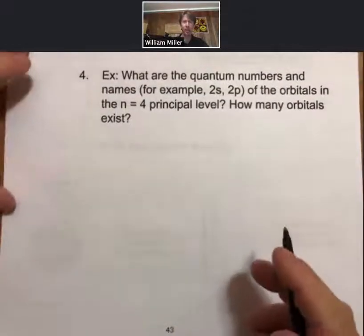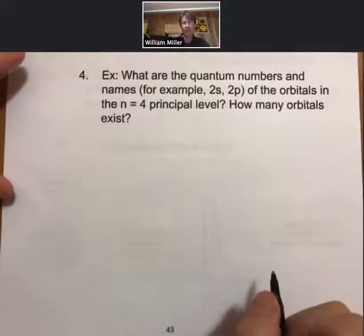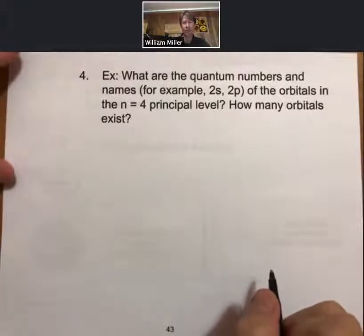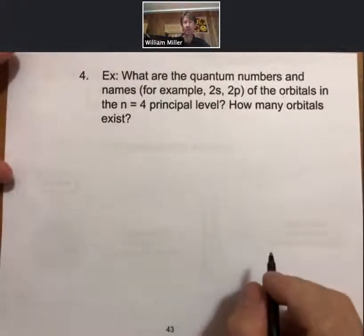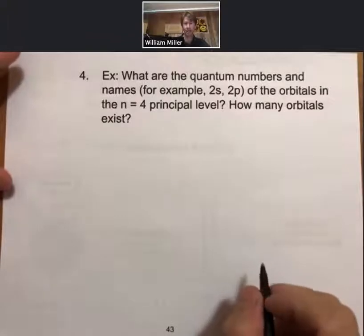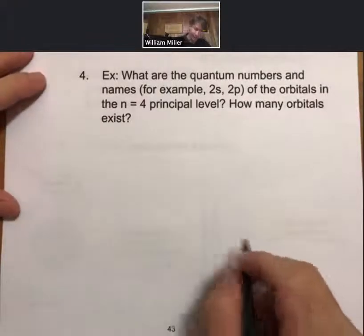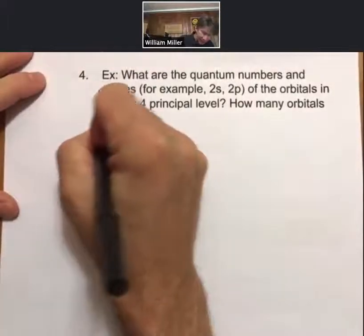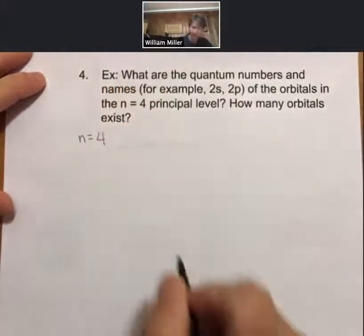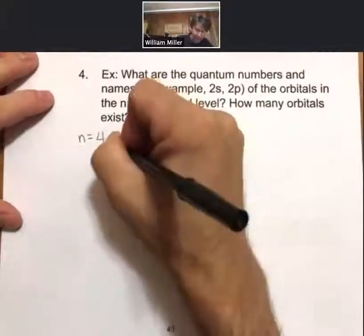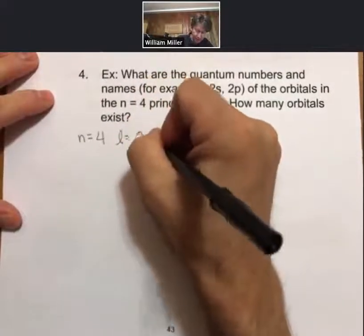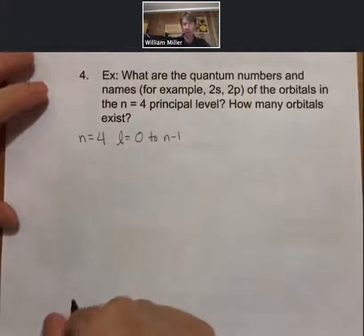Question then: what are the quantum numbers and names—for example, 2s, 2p—of the orbitals in the n equals 4 principal energy level? How many orbitals exist? Well, so for n equals 4, we said l equals 0 to n minus 1.